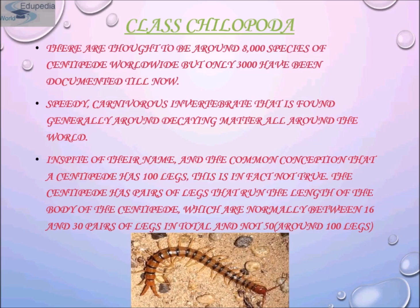Centipedes have pairs of legs running the length of the body, normally between 15 to 30 pairs — not 50 pairs. There are thought to be around 8,000 species of centipede worldwide, although only about 3,000 have been properly documented. Centipedes can range in size from a few millimeters to 30 centimeters long. Their bite is painful to humans but not fatal, unless the human is allergic to bee or wasp stings. They are usually found in moist habitats under rocks or in burrows.